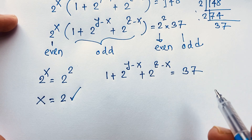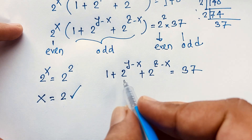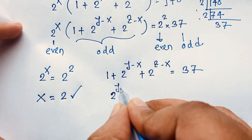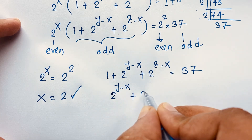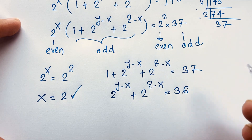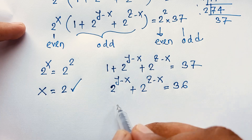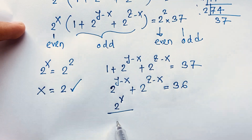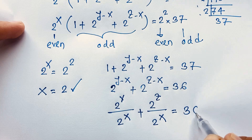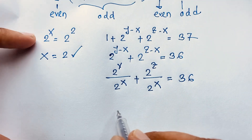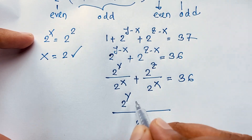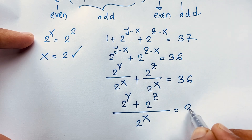Now, y and z are still unknown. Moving the 1 to the right side, we get 2 to the power y minus x plus 2 to the power z minus x equals 37 minus 1, which is 36. Expanding as fractions with denominator 2 to the power x, then multiplying through, we find 2 to the power y plus 2 to the power z equals 36 times 2 to the power x.